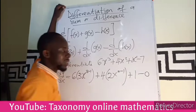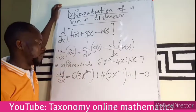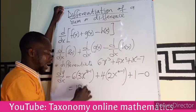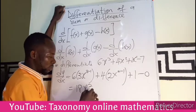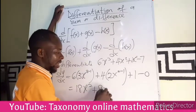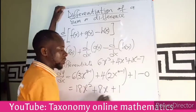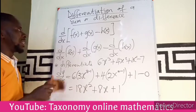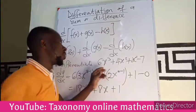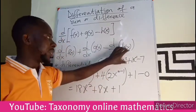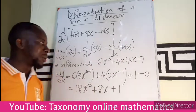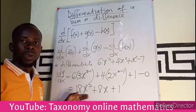So here this is just going to be 18x² + 8x + 1. So if you are performing differentiation and there is addition, you just perform the differentiation on each of the terms and add them together or subtract them together. This is what you get.